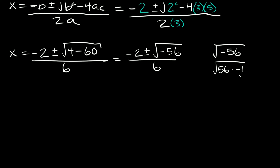Now each of these gets their own square root, so we write it as the square root of 56 times the square root of negative 1. Now the square root of 56 we can simplify — we want to use a perfect square if possible, something like 4, because 4 times 14 is equal to 56. So we can break that down into the square root of 4 times the square root of 14, and then we're multiplying by the square root of negative 1, which is specifically defined as i. That's where the imaginary number symbol comes from.